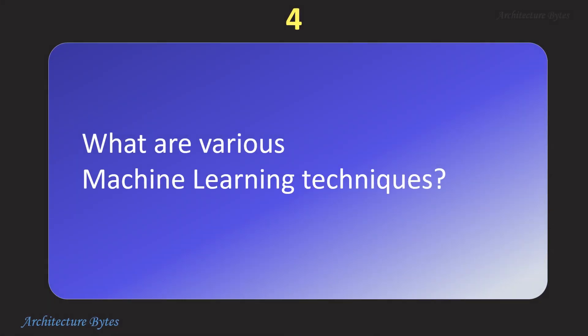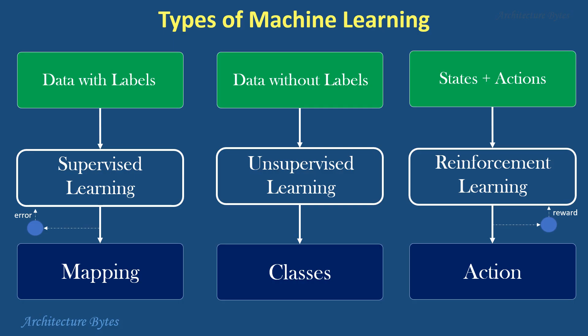What are various machine learning techniques? The learning part in machine learning can be broadly categorized as supervised, unsupervised, and reinforcement. In supervised learning, input data is labeled, while in unsupervised learning it is not. In reinforcement learning, an agent or computer program performs actions and learns from positive or negative feedback from its environment.